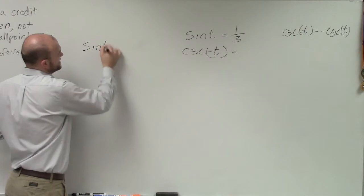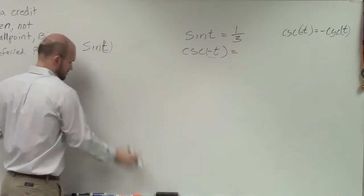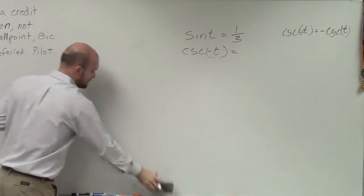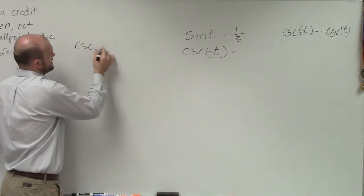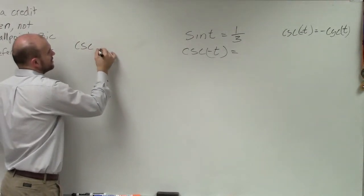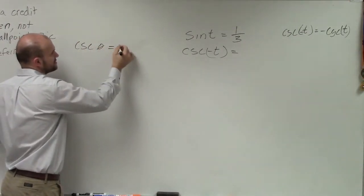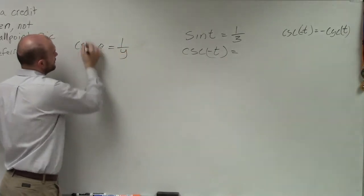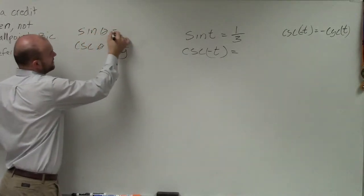one thing else we need to know about sine of t, or sorry, cosecant of t. Remember we talked about the cosecant of t. Let's call cosecant of theta equals 1 over y, because the sine of theta equals y.